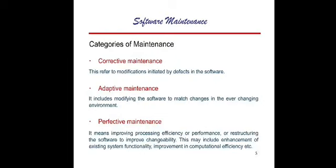Corrective maintenance refers to the modification initiated by a defect. Sometimes there is a defect in the software, and to remove that particular defect, due to the complexity of the defect, there can be situations where different types of other defects can take place into the system. Another maintenance type is adaptive maintenance, which includes modifying the software to match changes in the ever-changing environment.